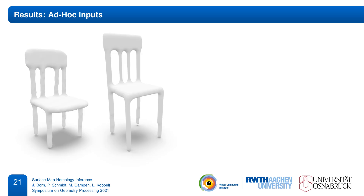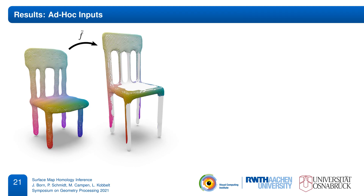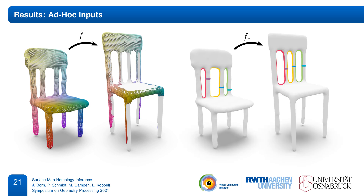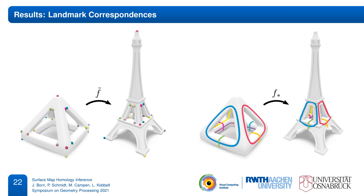This high tolerance to errors allows us to quickly generate valid homology maps from ad hoc inputs — for example, sampled maps generated by a rough extrinsic alignment and nearest neighbor projections. Although the resulting map contains discontinuities, gaps, and non-injective overlaps, it still suffices for the inference of the desired map topology. Another common input are shapes with landmark annotations, which can be seen as cases of extremely sparse sampled maps. Here we infer the intended homology map despite the sparsity and geometrical dissimilarity of the two objects.